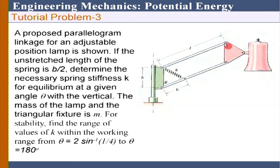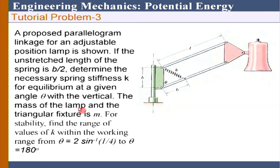The last challenging problem: the idea is to design an adjustable lamp with a parallelogram linkage. This member is parallel to the other one, so it will always remain a parallelogram and you can adjust its height. But remember there is a spring — everything is controlled by this spring. The unstretched length of the spring is B/2. We need to determine the necessary spring stiffness K for equilibrium at a given angle theta with the vertical. The first thing is to find out the potential energy of the system; the mass includes both the lamp mass and fixture mass.